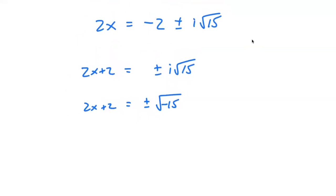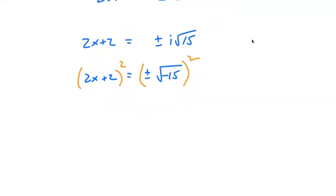To get rid of the plus or minus square root, the whole reason why there was a plus or minus square root was because there was a square, and then we take the square root of it. So let's just square both sides so that we can remove the plus or minus square root. You have just negative 15.